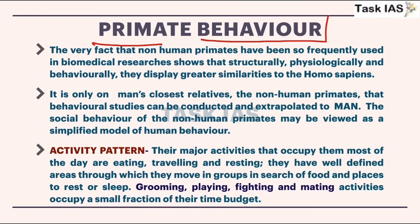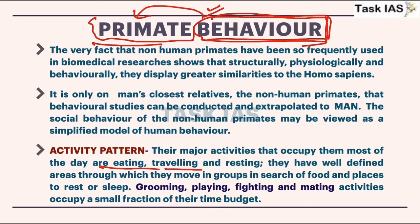Now primate behavior. Humans have some kind of behavior sometimes included in non-verbal communication. Behavior is a very large term — it includes cultural behavior and our way of doing anything. These kinds of behaviors are also found in primates. Activity patterns include eating, traveling, resting, grooming, playing, fighting, and mating activities. We need to understand these behaviors of our ancestors to understand why particular behavior is observed in humans.